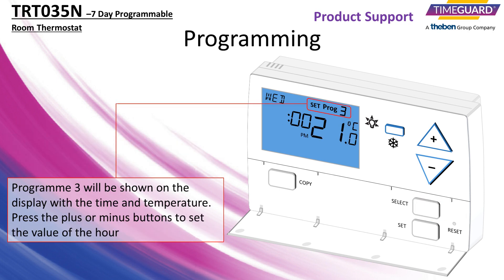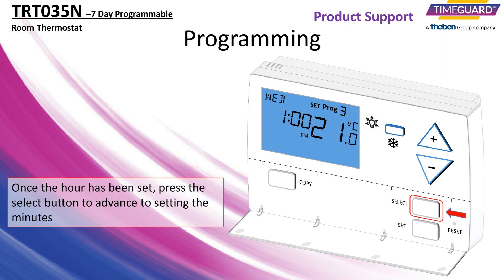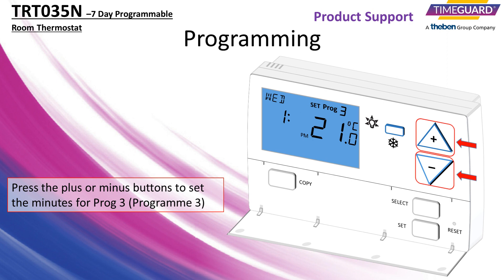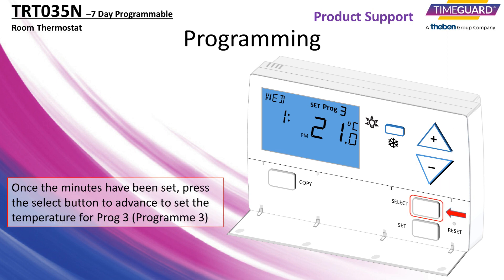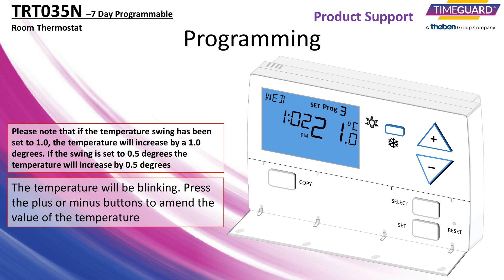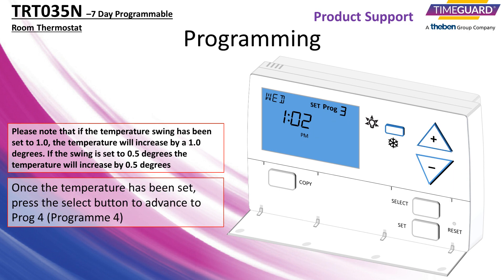Program 3 will be shown on the display with the time and temperature. Press the plus or minus buttons to set the value of the hour. Once the hour has been set, press the select button to advance to setting the minutes. Press the plus or minus buttons to set the minutes. Once the minutes have been set, press the select button to advance to set the temperature for program 3. The temperature will be blinking. Press the plus or minus buttons to amend the value of the temperature. Once the temperature has been set, press the select button to advance to program 4.